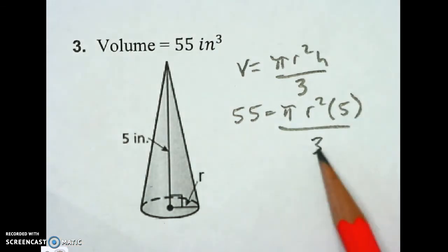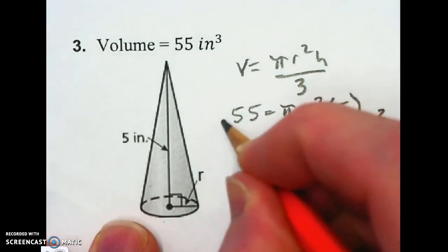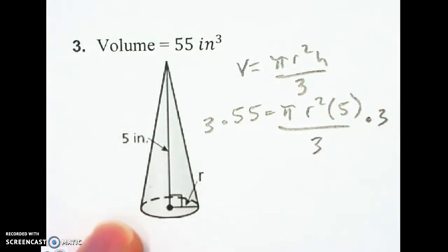First thing I like to do is get rid of this 3 on the bottom that's dividing. So I'm going to times both sides by 3 to get rid of that. That'll basically turn this into a cylinder problem because we know three cones go into a cylinder.